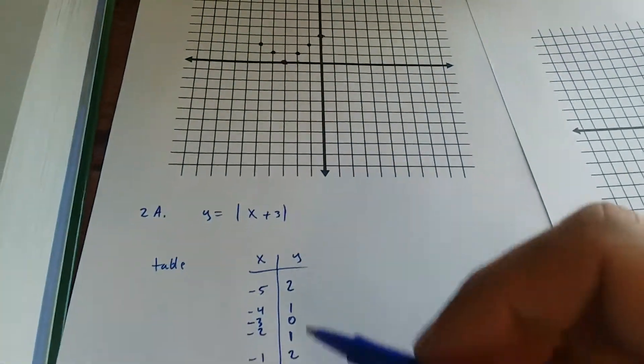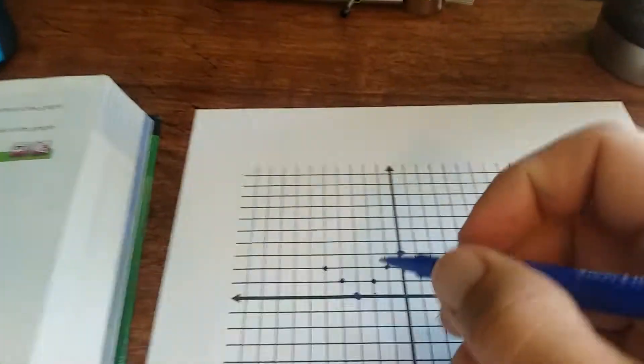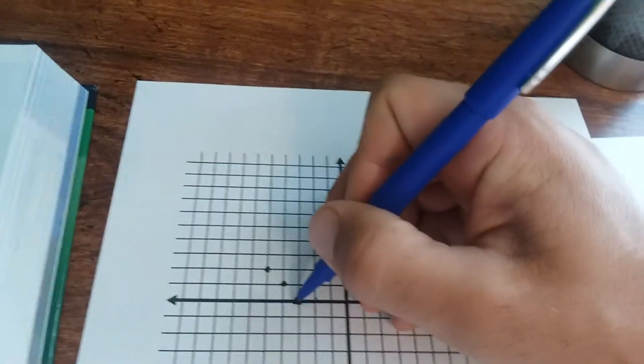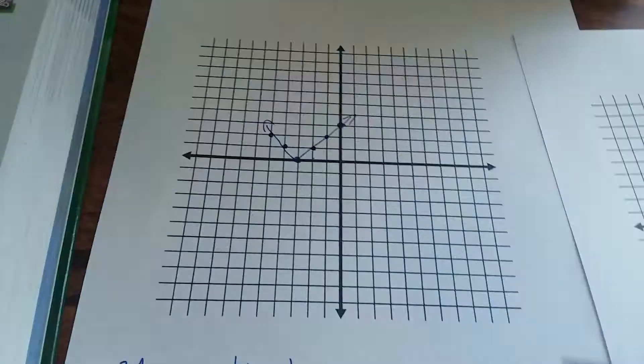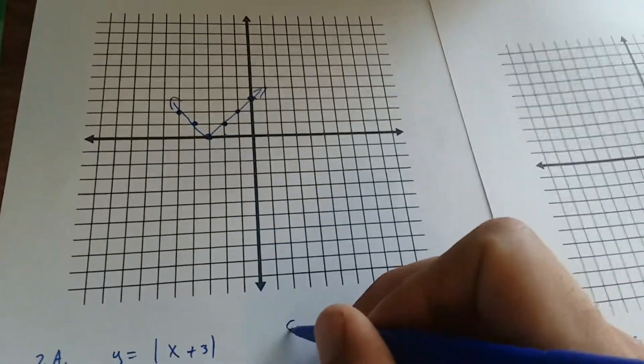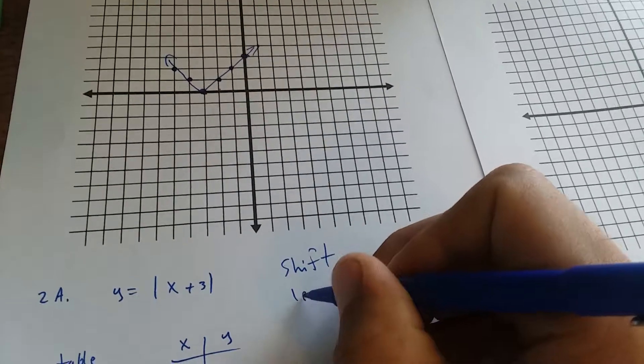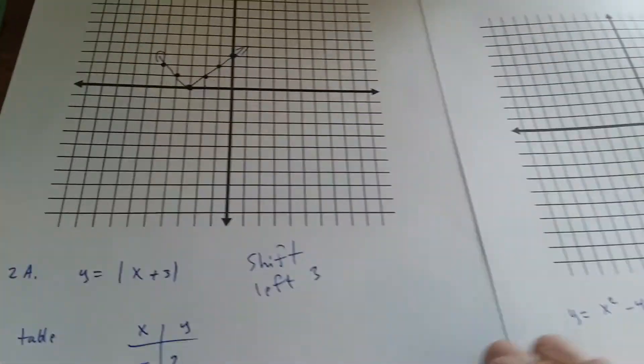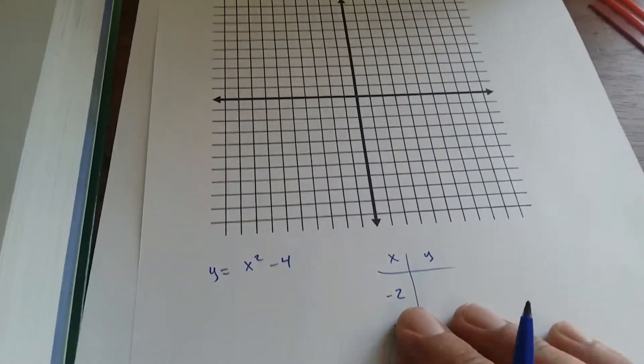Those are the points from our table. I graphed those. You can see the bottom corner's right there. So it's going to look like this. Okay. It says describe the translation. So to describe that, it would be shift left 3. Okay. That's describing that. And then we graphed it.